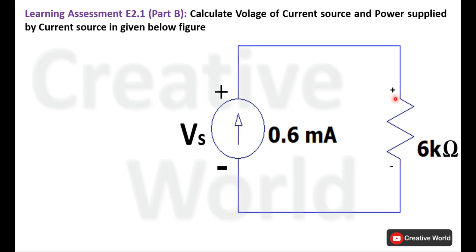Before starting the solution, we will mark polarity symbols across this resistance. This current is entering from this terminal of the resistance, so it will be taken with a positive sign, and leaving from this terminal, so this terminal will be taken with a negative sign.